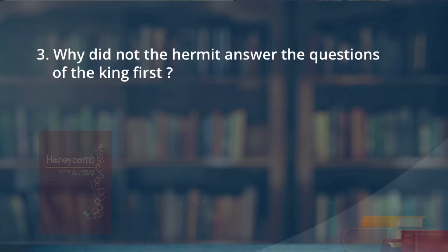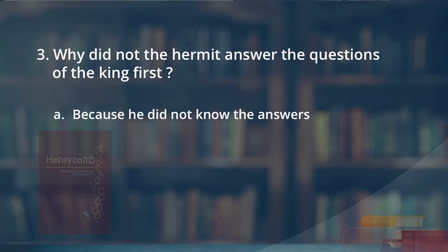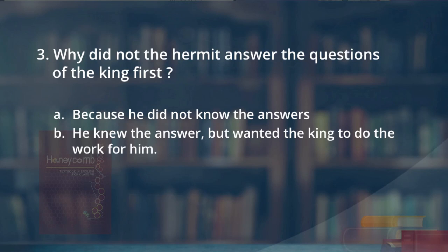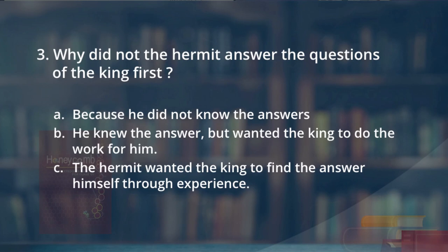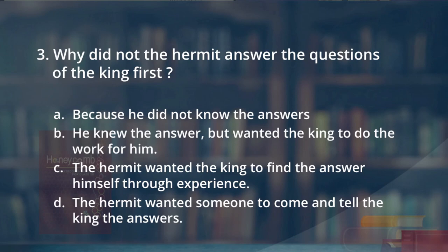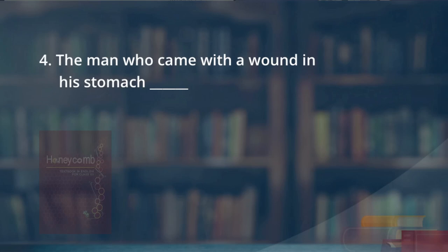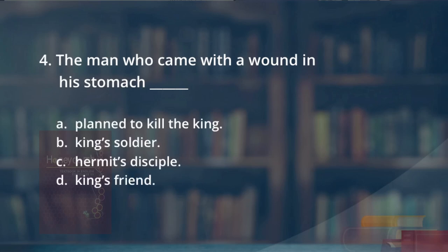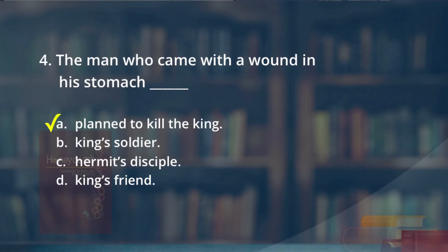Third question: why did the hermit not answer the king's questions at first? Options are: because he did not know the answers; he knew but wanted the king to do the work for him; the hermit wanted the king to find the answers himself through experience; or the hermit wanted someone else to tell the king the answers. The correct answer is option C — the hermit wanted the king to find the answers himself through experience. Fourth question: the man who came with a wound in his stomach planned to kill the king, king's soldier, hermit's disciple, or king's friend? The answer is option A — the man planned to kill the king, as he was an enemy of the king.